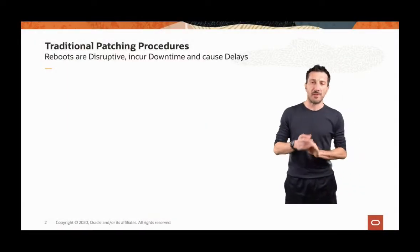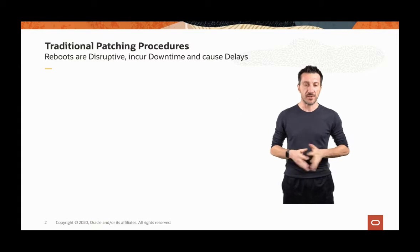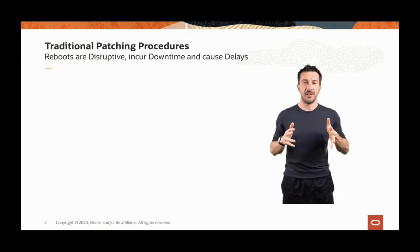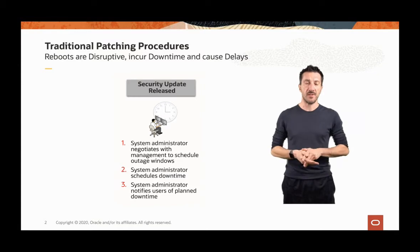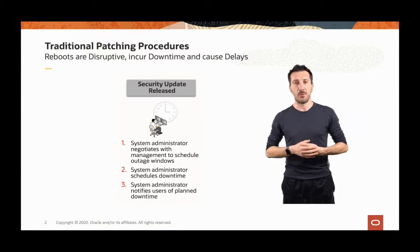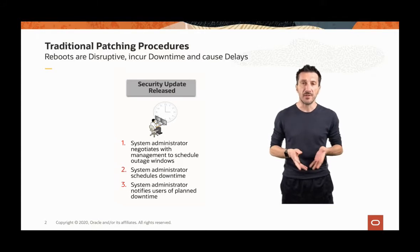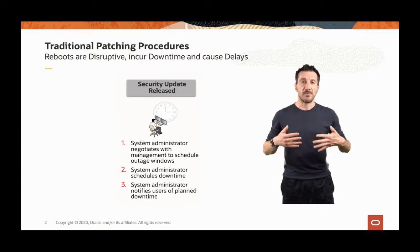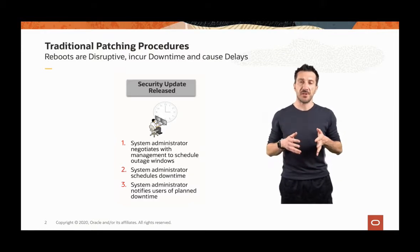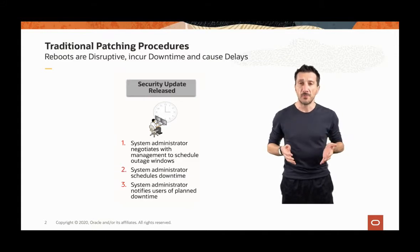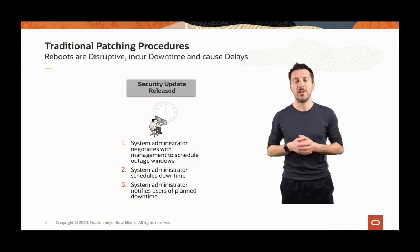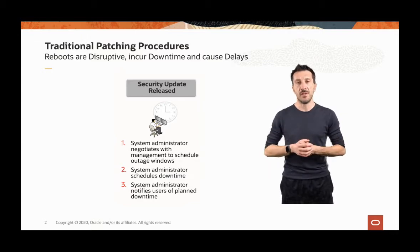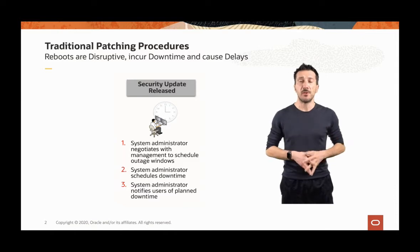Let's start with a quick evaluation of the traditional patching procedures. Usually, when a security update is released, system administrators start to evaluate when that kind of security fix or that list of security fixes can be applied or installed on the production systems. They have to understand the possible date when the service can get an outage, because the possible applications, databases, and systems have to be rebooted just to get those security fixes installed.